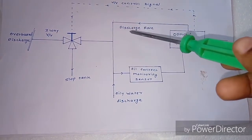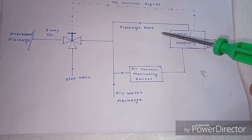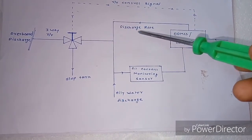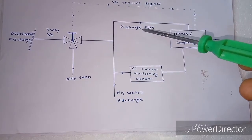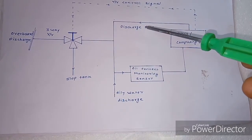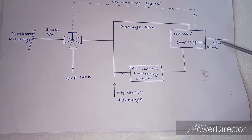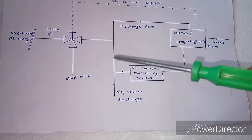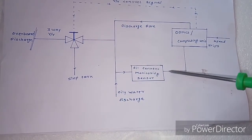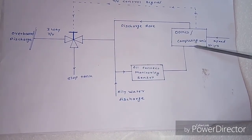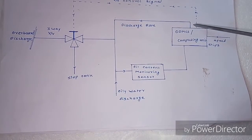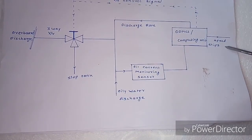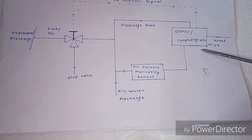First of all, I want to discuss discharge rate — I discussed this in my last video. When discharge rate is considered, sheave speed is also considered. The Oil-Contained Monitoring Sensor is the input to the computing unit, discharge rate is the output, and sheave speed is also an input unit.